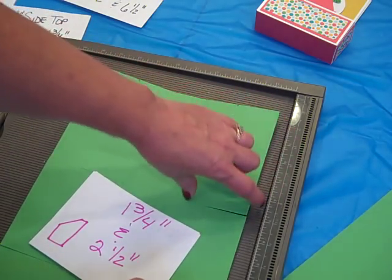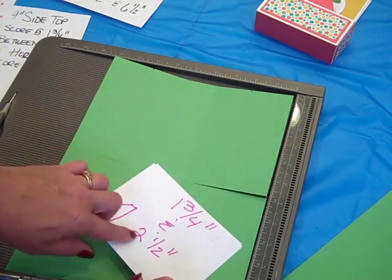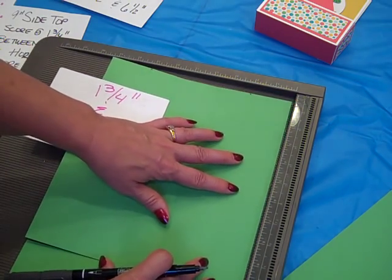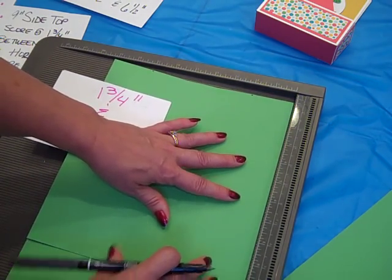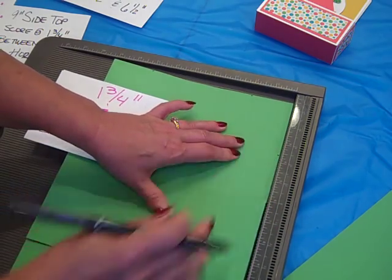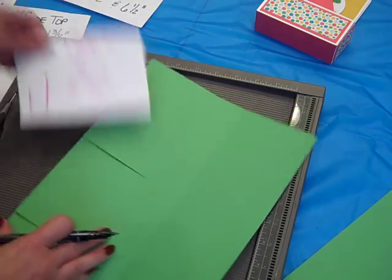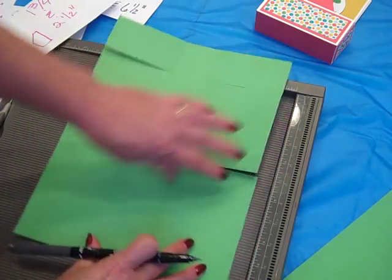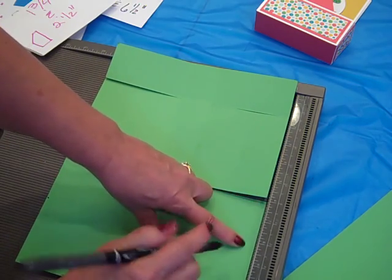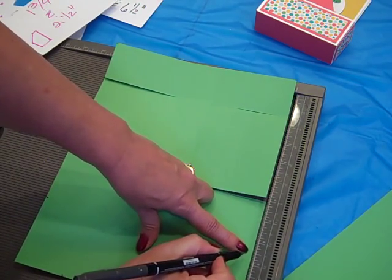Now we want to make a mark along the 12 inch side at 2½. Keep that up there, so again I'll keep that lined up at zero, one, 2½. Isn't that easy? I just love that feature on this simply scored scoring tool. Again line up the mark and 2½.